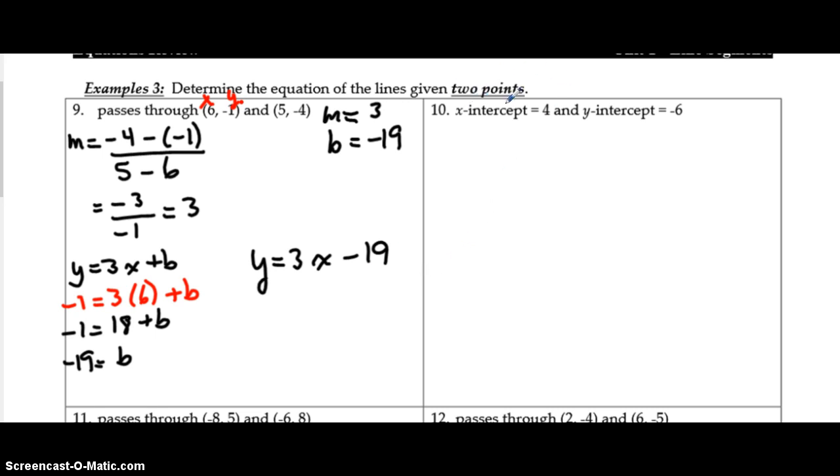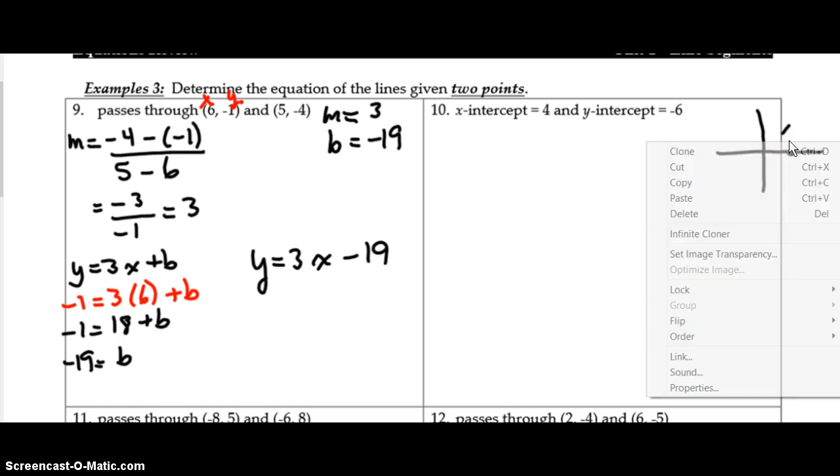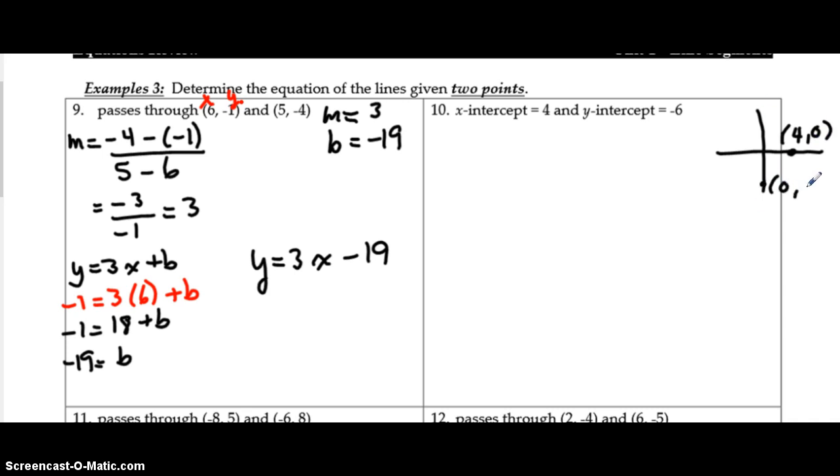Question 10 tells us two points, but they don't give us the coordinates. They tell us the x-intercept and the y-intercept. So really quickly, on a little sketch here, our line is going to cross the x-axis at positive 4. As a coordinate, that is (4, 0). Our y-intercept crosses the y-axis at negative 6, and as a coordinate, that is (0, -6). So we're going to use those to help us find the slope. Of course, in this case, we already have our b-value, so we won't need to do that second piece.